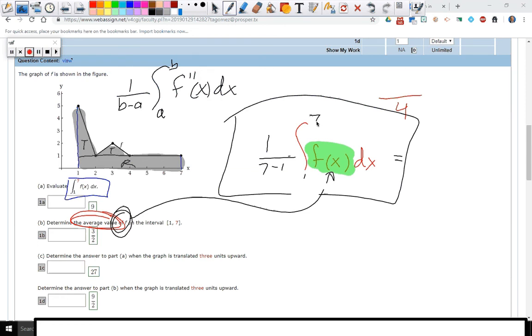Determine the answer of part A when the graph is translated three units upward. So you're just going to shift everything up three. Means that you're going to create a bigger rectangle on the bottom that has a height of three and still a base of six. So it's going to be eighteen added to whatever that was. Are we good? Eighteen added to the part A.